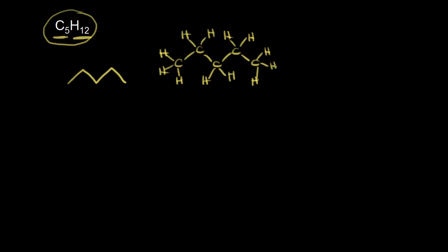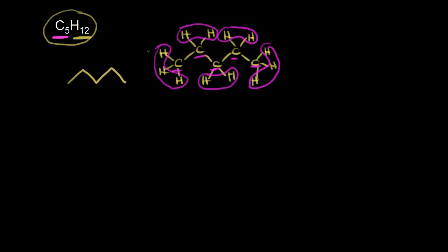Let's count up everything and make sure we have the correct molecular formula. We have one, two, three, four, five carbons — so that's C5. And then we should have 12 hydrogens: three plus two gives us five, plus two gives us seven, plus two gives us nine, and then three more for a total of 12. So C5H12 is the molecular formula for this compound.